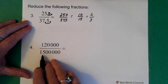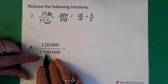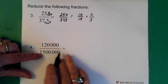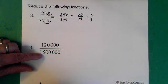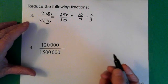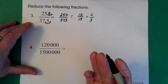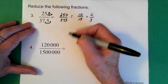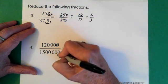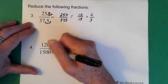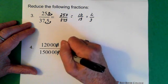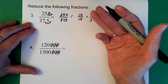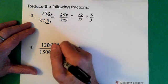We have one hundred twenty thousand divided by one million five hundred thousand. When you have numbers like this with all these zeros, the best approach is to start by getting rid of the zeros — top over bottom. So if you cancel one zero on top, you cancel one on the bottom, then top, bottom again. That way you won't make a mistake.